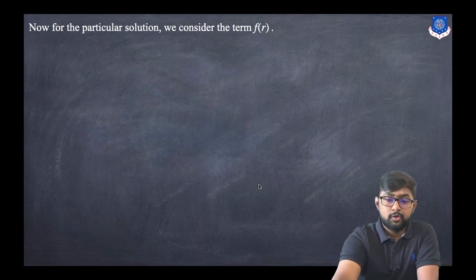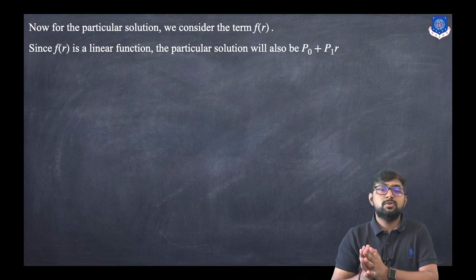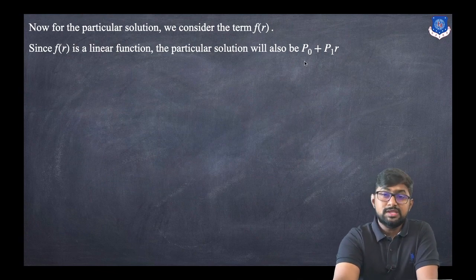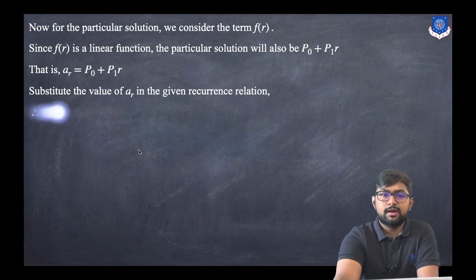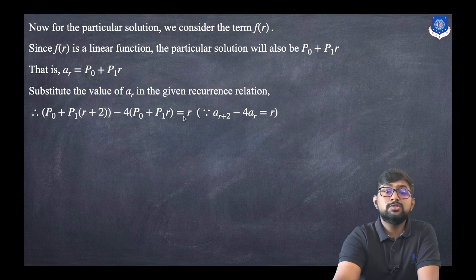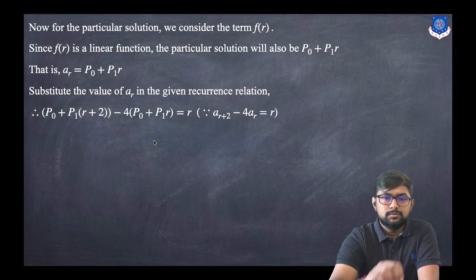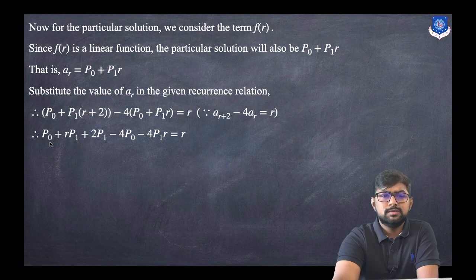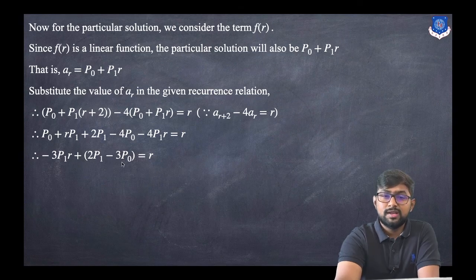For the particular solution, the right-hand side is r, which is a linear function. So the choice is a(r) = p0 + p1·r. Substituting a(r+2) = p0 + p1·(r+2) into the recurrence relation a(r+2) − 4·a(r) = r, and expanding, we get: p0 + p1·r + 2p1 − 4p0 − 4p1·r = r, which simplifies to −3p1·r + (2p1 − 3p0) = r.